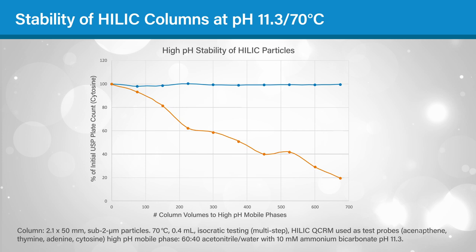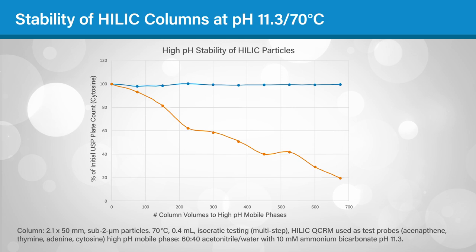However, columns packed with BEH-based stationary phases have improved high pH stability, making them ideal for method development approaches that involve screening both acidic and basic mobile phases.